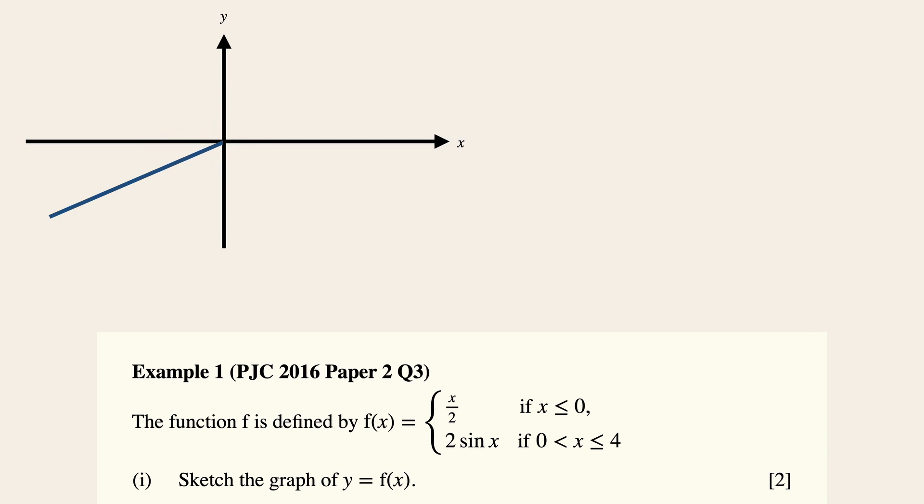Now the next section we are going to sketch is 2 sine x. Now do note that x, be very careful over here, is in radians. So you could do it quickly via a graphing calculator. Or for me, I know that this is at least half a period of a sine graph, since pi has a value of 3.142.